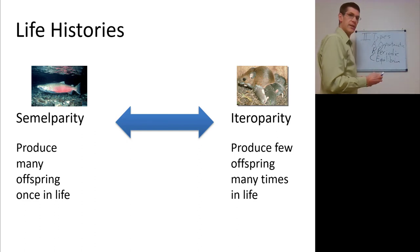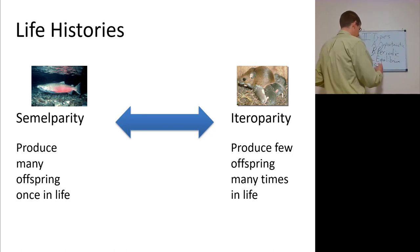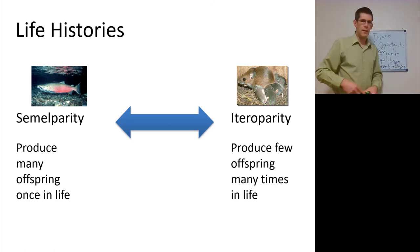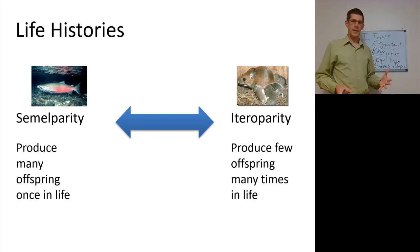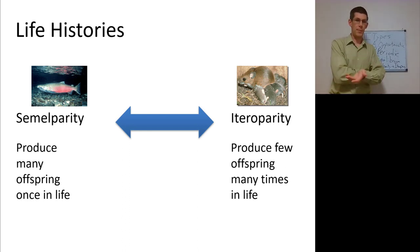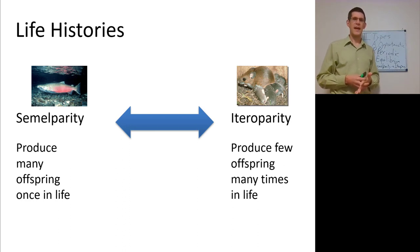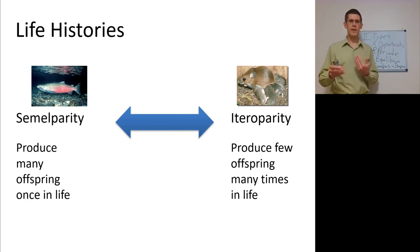On the extreme end we see semelparity versus iteroparity. Semelparity is a once-in-a-lifetime reproductive event — producing many offspring just once, a total resource dump, with no parental care. The parent is dead. Iteroparity means producing few offspring many times. You can see the trade-off: few vs. many offspring, and many times vs. once.